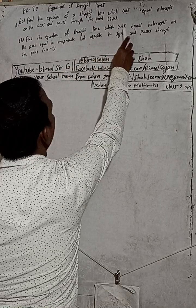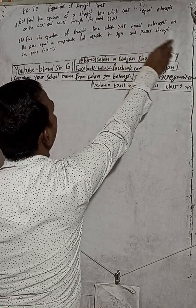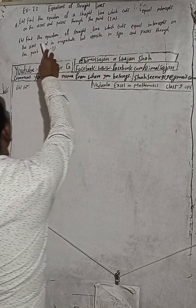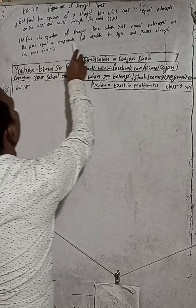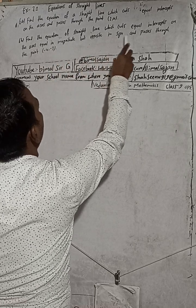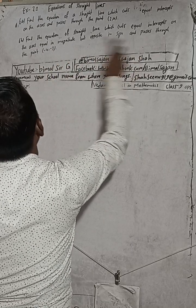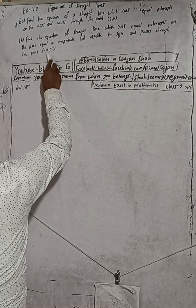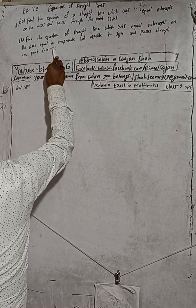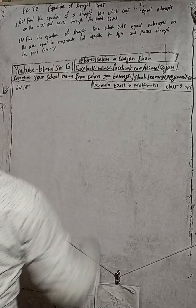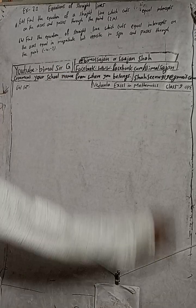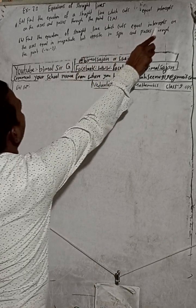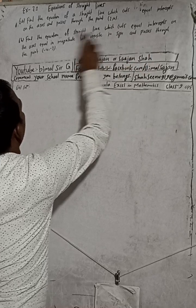...which cuts equal intercepts on the axis, equal in magnitude but opposite in sign, and passes through the point (-4, -3). You can see this question is about intercepts on a particular axis.